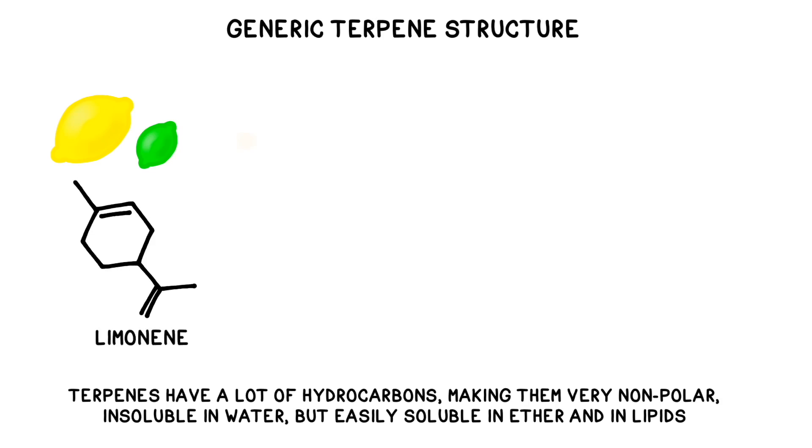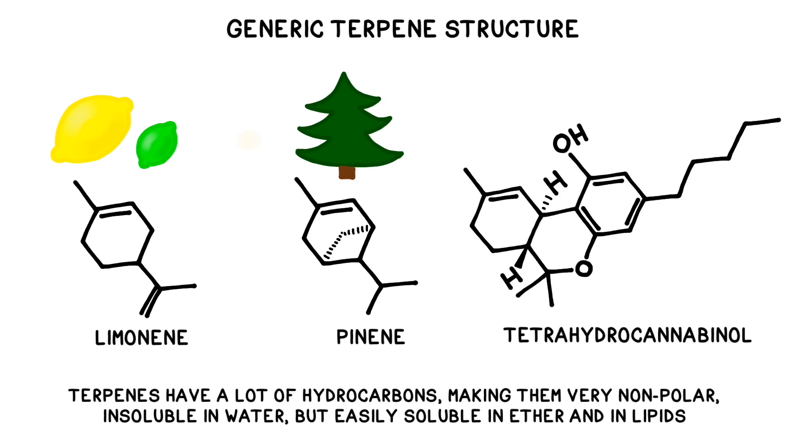As you can see from these drawings, terpenes tend to contain a lot of hydrocarbons. They're extremely nonpolar and thus non-soluble in water. This makes them an ideal defense mechanism for plants because they won't wash off when it rains.